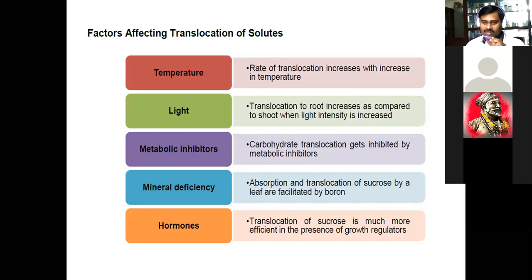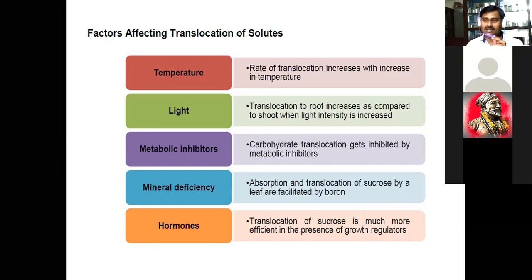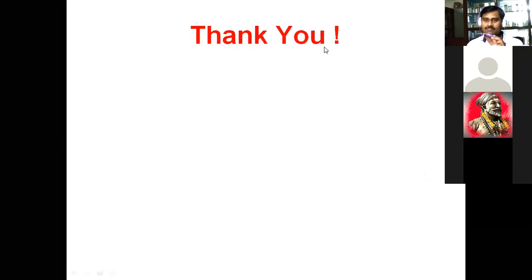Translocation of sucrose is much more efficient in the presence of growth hormones. In the presence of auxin and cytokinin, growth takes place properly and mass flow also occurs at a higher rate. Where inhibitory anti-growth hormones such as abscisic acid are present, translocation occurs less. So this is all about the factors that affect the mechanism of translocation.